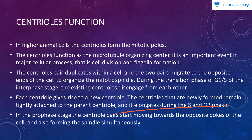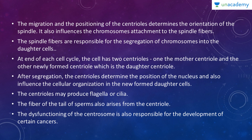The newly formed centrioles remain tightly attached to the parent centriole and elongate during S and G2 phase. In prophase, the centriole pairs start moving toward opposite poles of the cell and simultaneously form the spindle. The migration and positioning of the centrioles determines the orientation of the spindle, which in turn influences the chromosomes attached to the spindle fibers. The spindle fibers are responsible for the segregation of chromosomes into the daughter cells. At the end of each cycle, the cell has two centrioles: the mother and the newly formed daughter centriole.